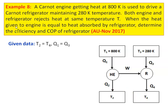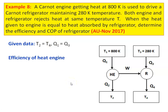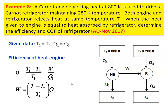When the heat given to the engine equals the heat absorbed by the refrigerator — heat given to the engine is Q1, heat absorbed by the refrigerator is Q3. When these two are equal, determine efficiency and COP of the refrigerator. The efficiency of the heat engine: eta equals (T1 minus T2) divided by T1, which is also equal to W divided by Q1. From the definition of efficiency, we calculate W. Work output from the heat engine equals (T1 minus T2) divided by T1, multiplied by Q1.